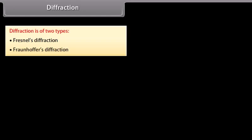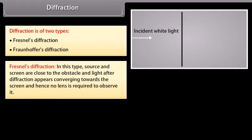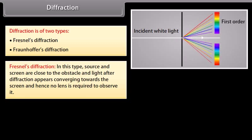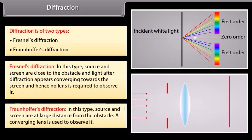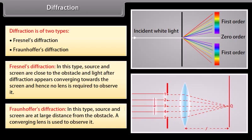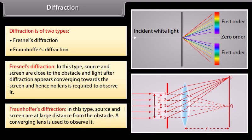Fresnel's diffraction and Fraunhofer's diffraction. In Fresnel's diffraction, the source and screen are close to the obstacle, and light after diffraction appears converging towards the screen, and hence no lens is required to observe it. In Fraunhofer's class, the source and screen are at a large distance from the obstacle, and a converging lens is used to observe it.